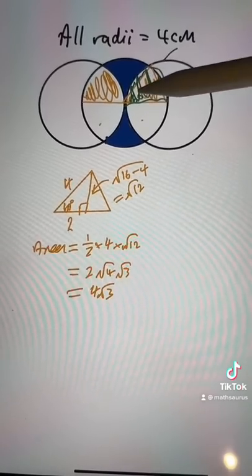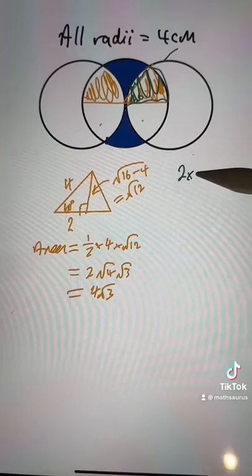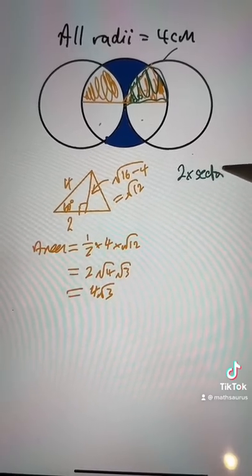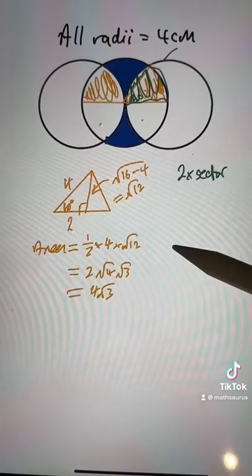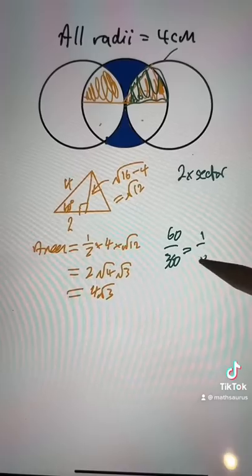So to work the area out here, what I want is two lots of the sector, which is a 60 degree angle. So 60 out of 360 is one sixth.